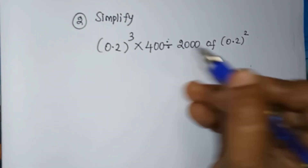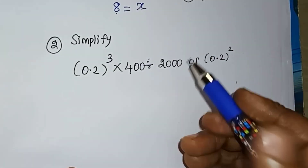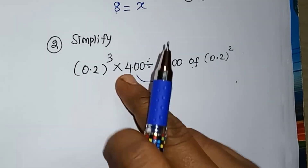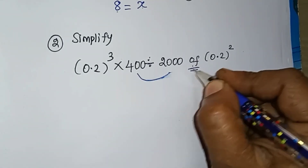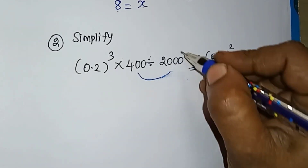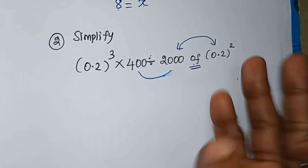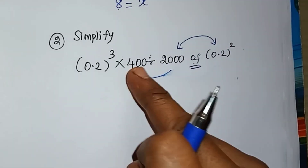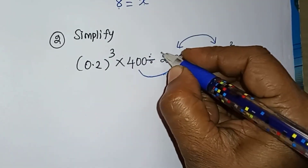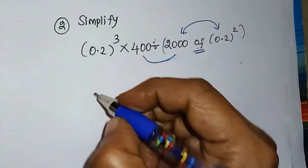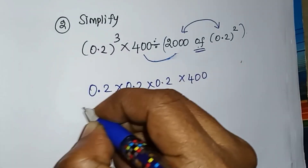So first, there is division and 'of'. In the BODMAS rule, we have the first bracket, then division. We need to apply division first. So the division gives us a value of 4 divided by 2, which we need to work with. We need to elaborate on the 3rd step: 0.2 cubed into 400, division is 3.